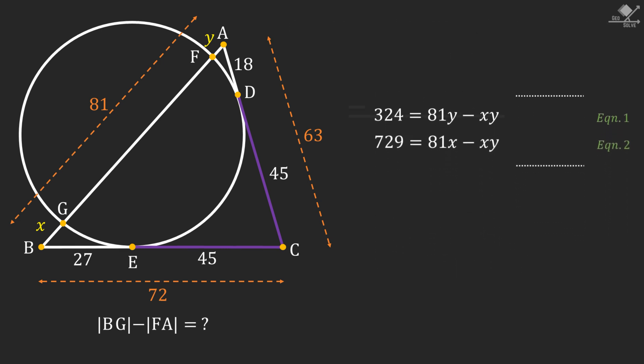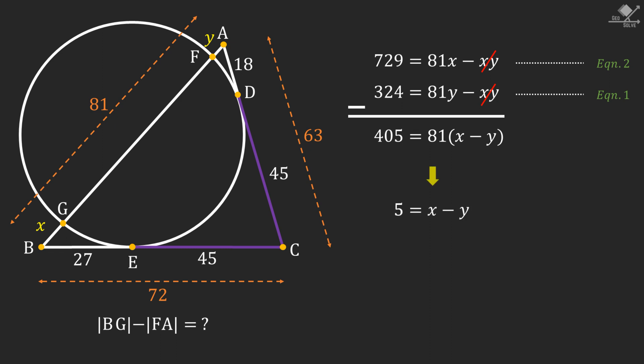Now let's subtract first equation from second one. Here XY terms will cancel out and that will give us 405 equals 81 times X minus Y. From here, dividing both sides with 81, X minus Y can be found as 5 units. And this is actually the result of the difference BG minus FA, which is our answer.